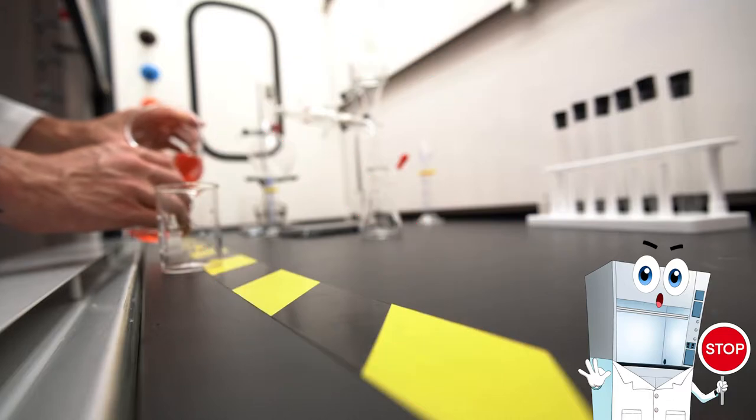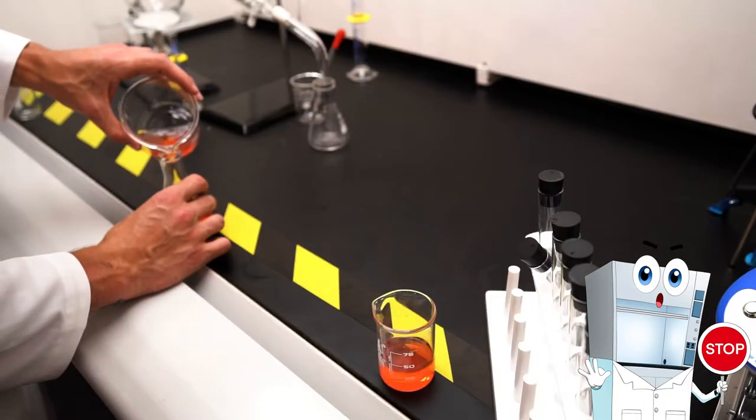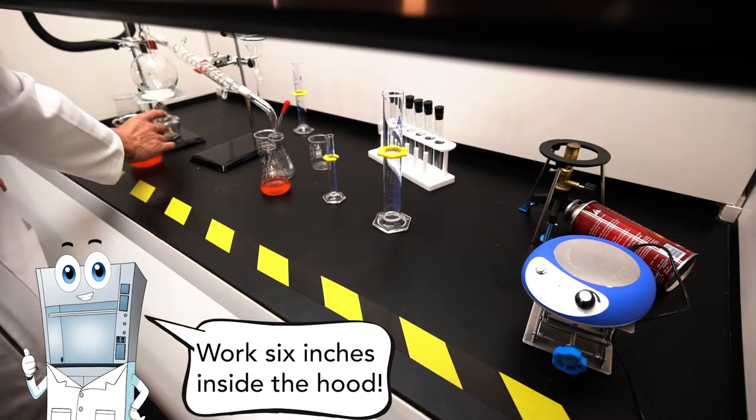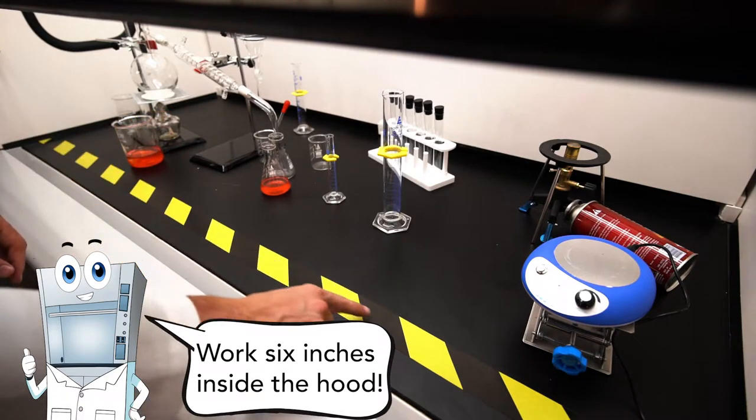Always remember to conduct work 6 inches back from the sash. This keeps fumes being generated away from the sash opening in the user's breathing zone.